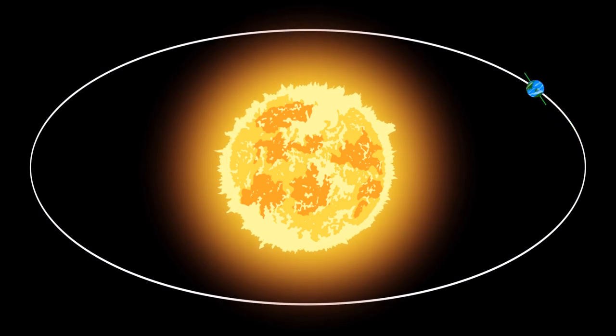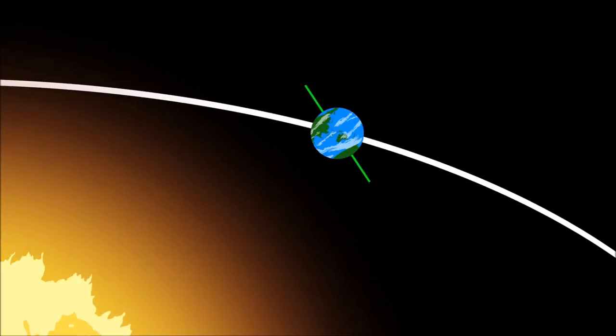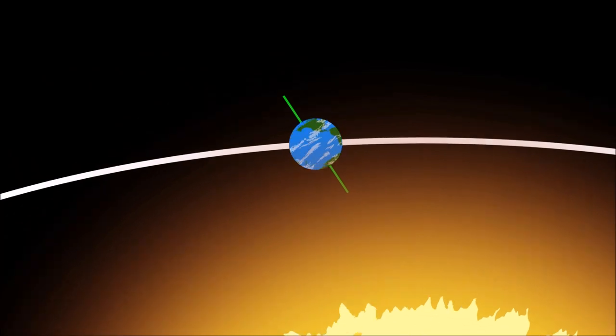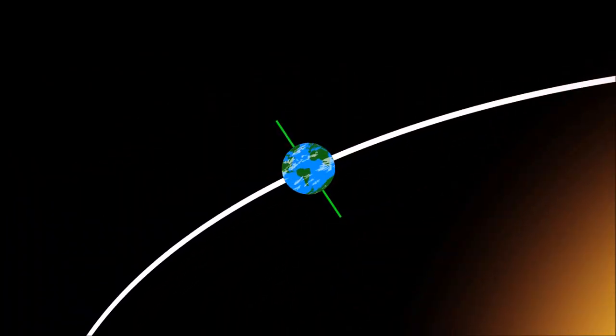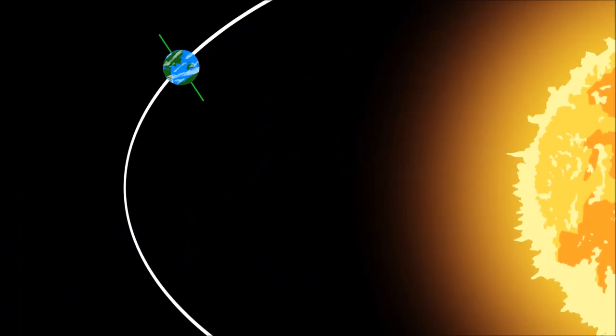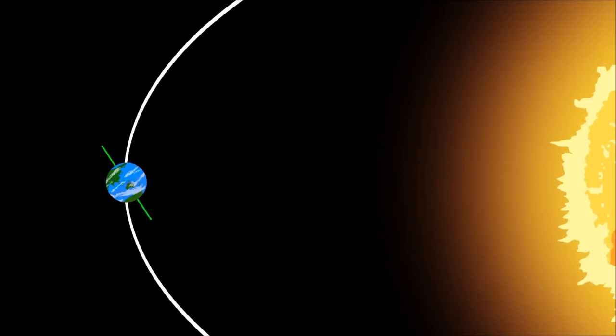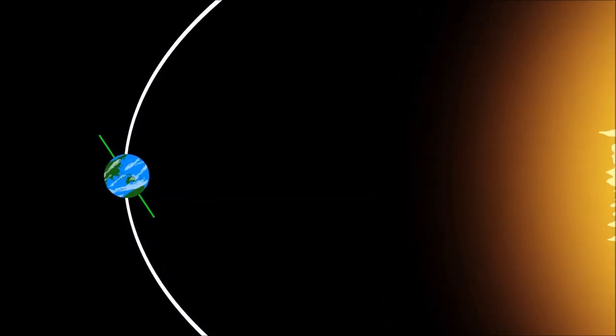When the Earth orbits around the Sun, it stays tilted at the 23.5 degree angle. Now when the Southern Hemisphere faces the Sun, it experiences summer, while the Northern Hemisphere experiences winter.